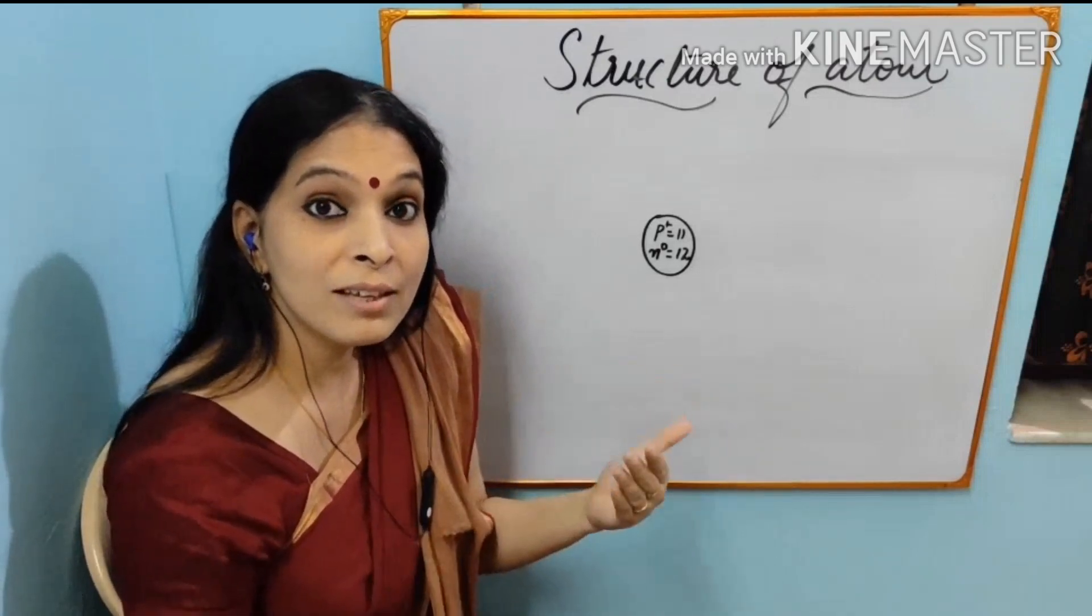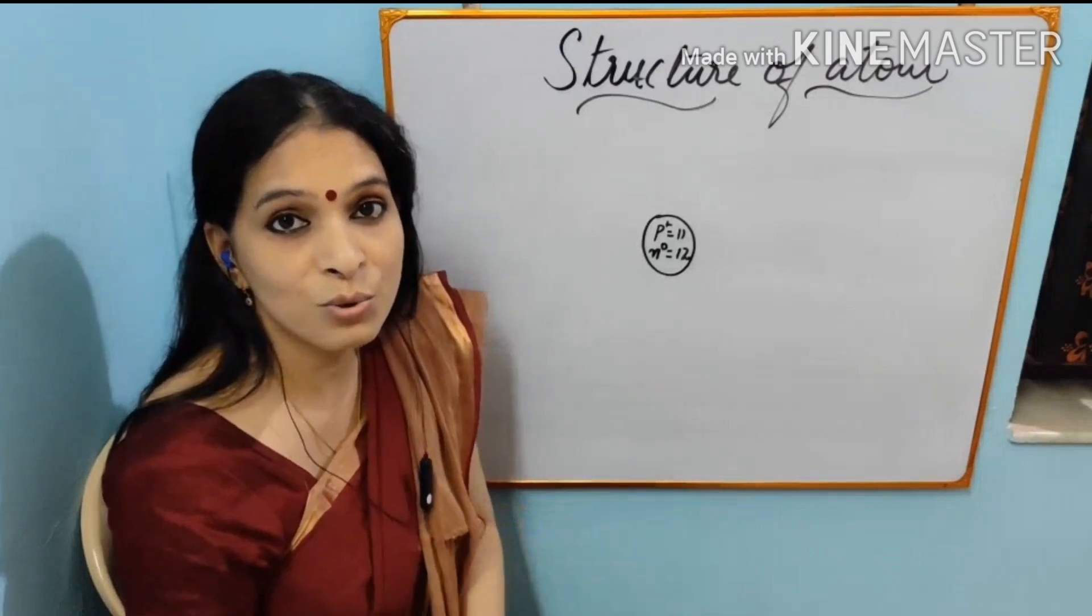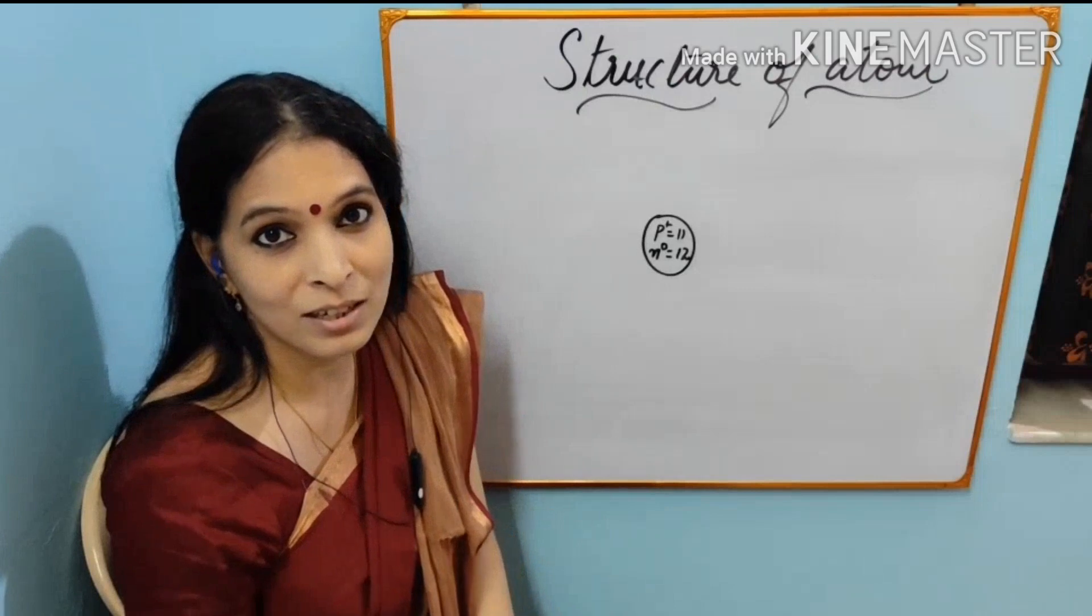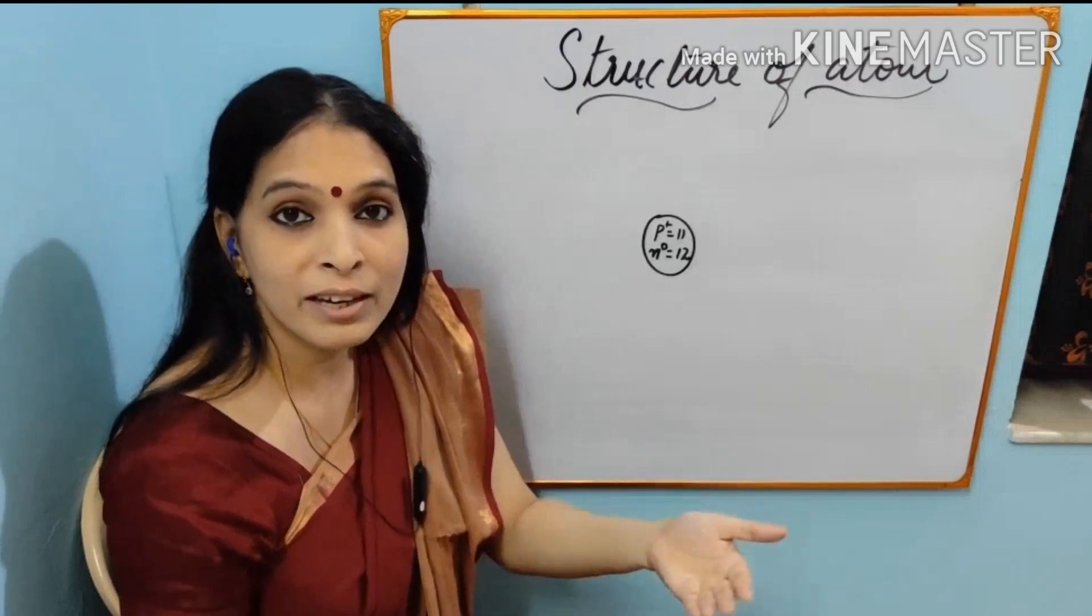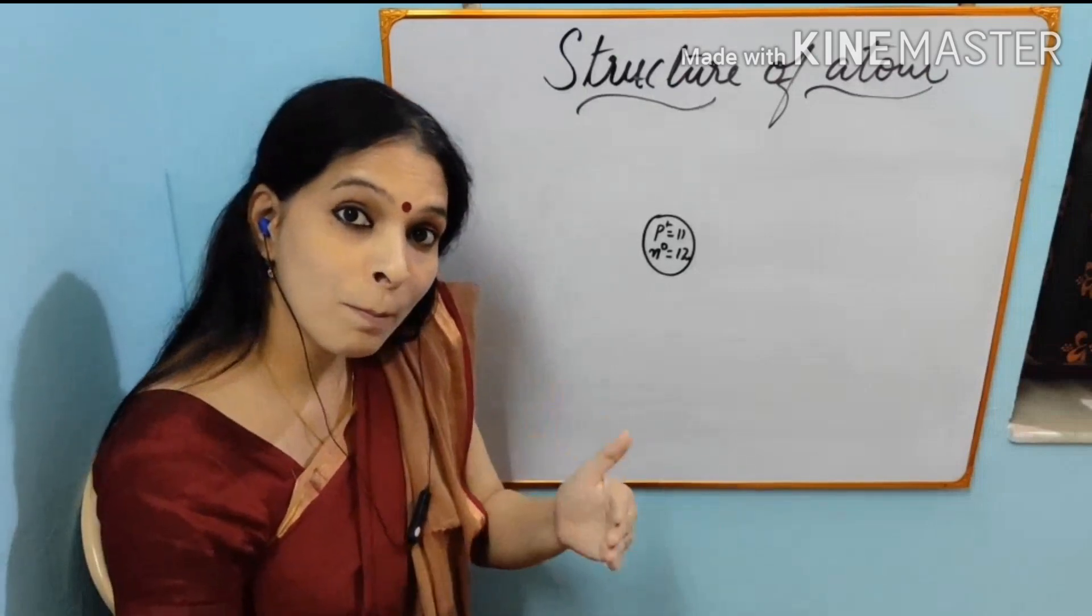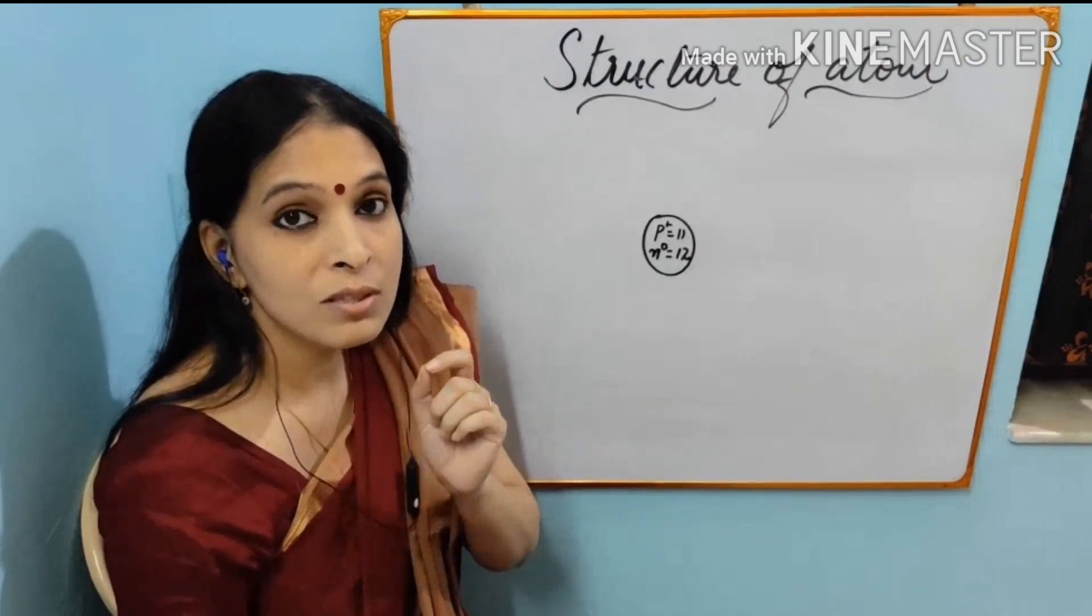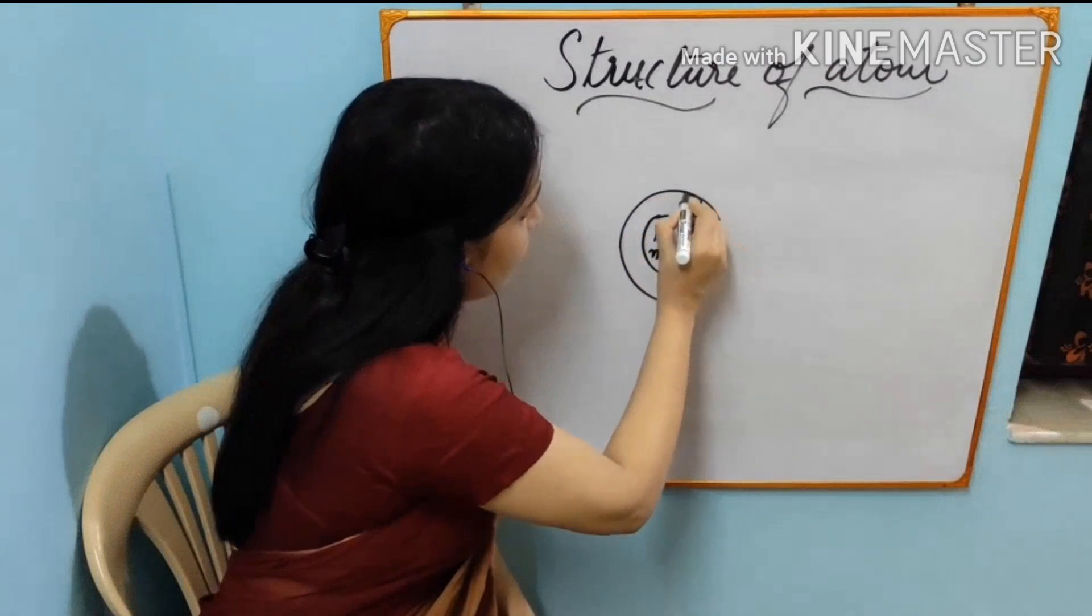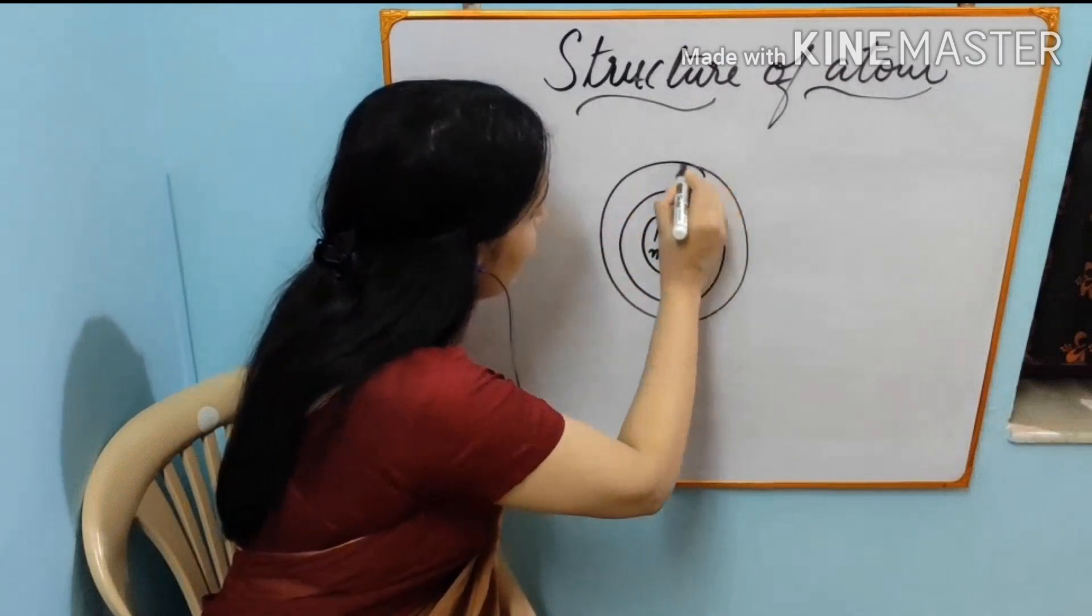I told you non-living things have their own unwritten rules. They are very obedient and they are very disciplined. Electrons will not be crowded here and there. They are arranged properly in orbits or shells. So these 11 electrons of sodium are arranged in three shells like this.